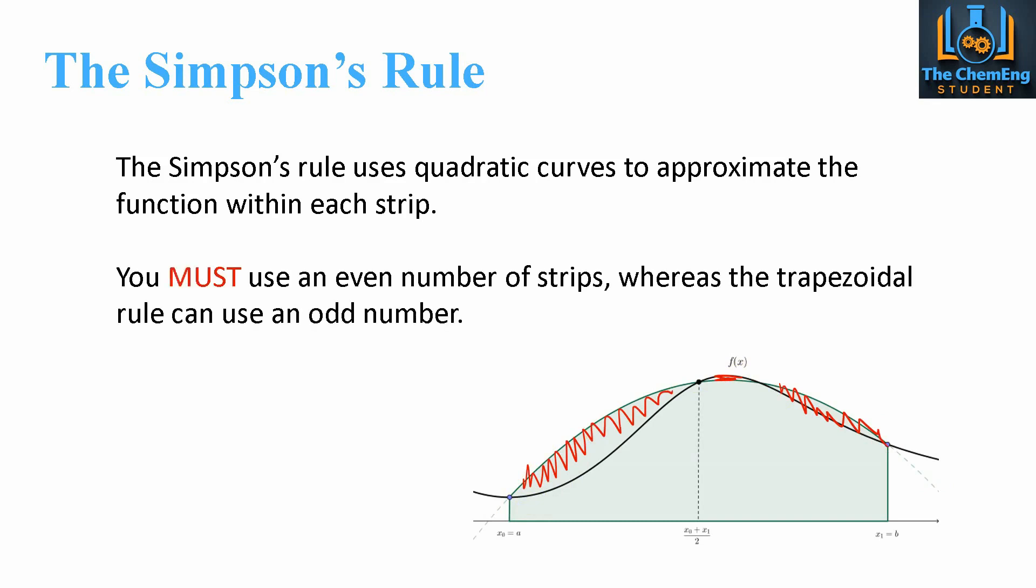Now, there is a condition here with the Simpsons rule, and it's that you must use an even number of strips when using the Simpsons rule. Whereas the trapezoidal rule, you can use both odd and even number of strips. So, for example, a question said, use a suitable numerical integration technique by using five strips. Then that means that we could not use Simpsons rule. We would have to use the trapezoidal rule. Whereas if we were given to use eight strips, then we could have a selection of either or. So, that's the one condition that you must have when considering the Simpsons rule.